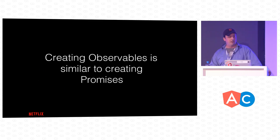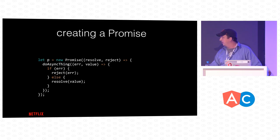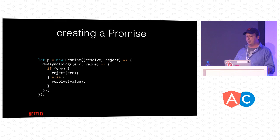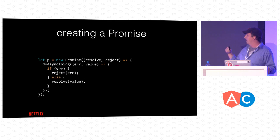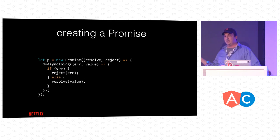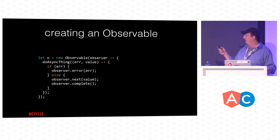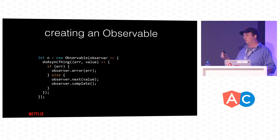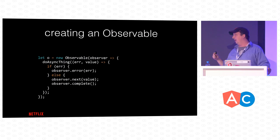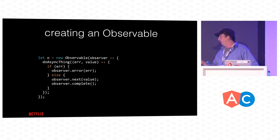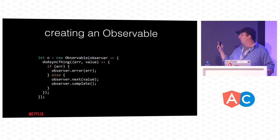Creating observables is also similar to creating promises. With a promise, you pass a function to the constructor that gives you resolve and reject — if there's an error you call reject, if you get a value you call resolve. Creating an observable is the same idea: there's a new Observable constructor, you give it a function that provides an observer instead of resolve or reject. You call observer.error if there's an error, and observer.next if you get a value — you can call next however many times you want, zero times or dozens. Then when you're done, you can call complete, though even that's optional.